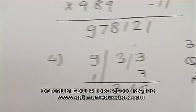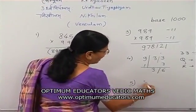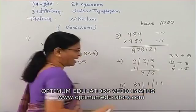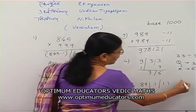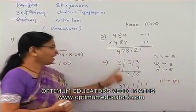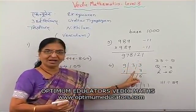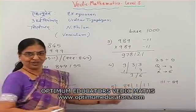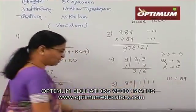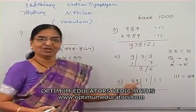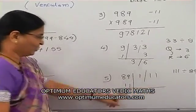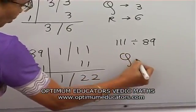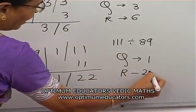Our Nikhilam method is very useful. Another example: 111 divided by 89. Here 89 has 2 digits, so mark a line after 2 digits. By Nikhilam — last from 10, rest from 9 — the complement is 11. Then 1 (the first digit of dividend) stays, multiply: 11 × 1 = 11, so adding gives 22 in the remainder section. The quotient is 1 and the remainder is 22.